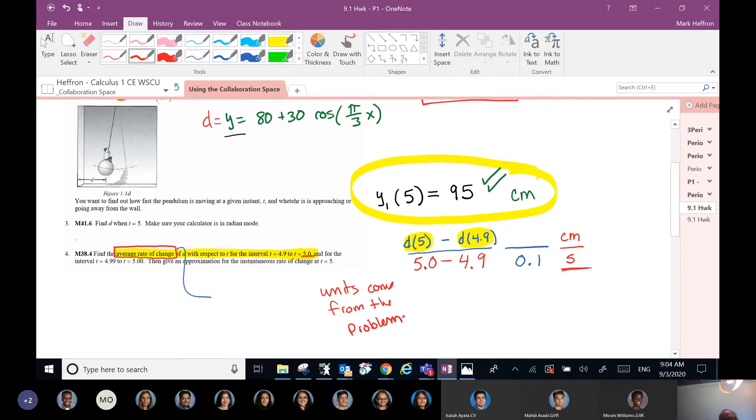That's how we can always find the units for our rate of change. Our units come from the problem. What's d5 minus d4.9? What's the number that goes in the numerator? We're going to need a number. Remember, when we plugged in d5, we got 95, didn't we? So we'll need to do that same kind of thing that Ariana helped us with. But instead, we're going to use the y we have in our calculator at 4.9. Has anybody done that math yet?